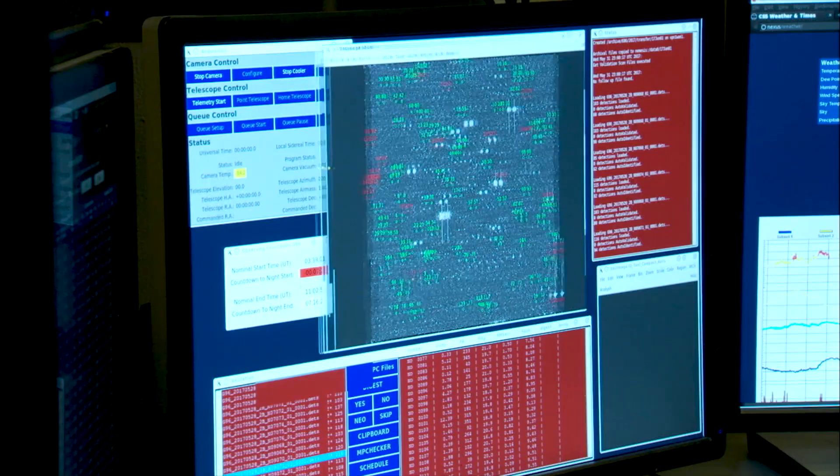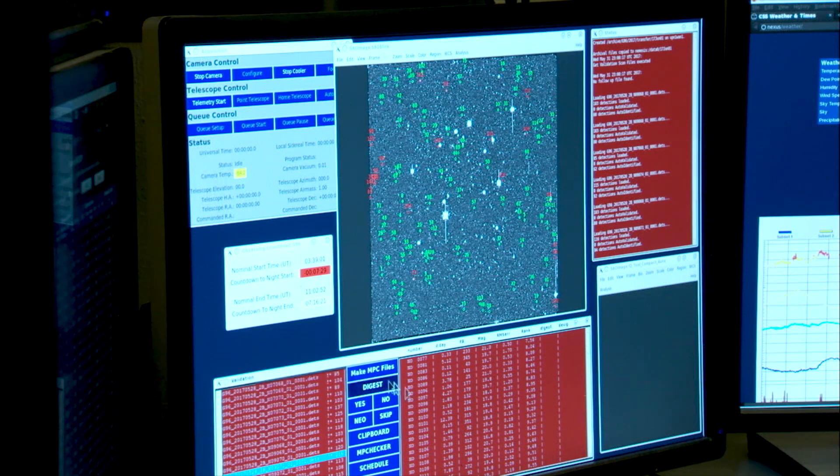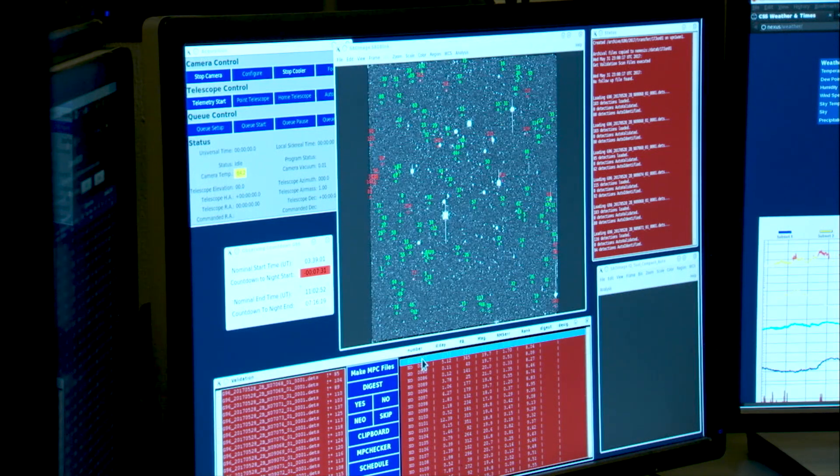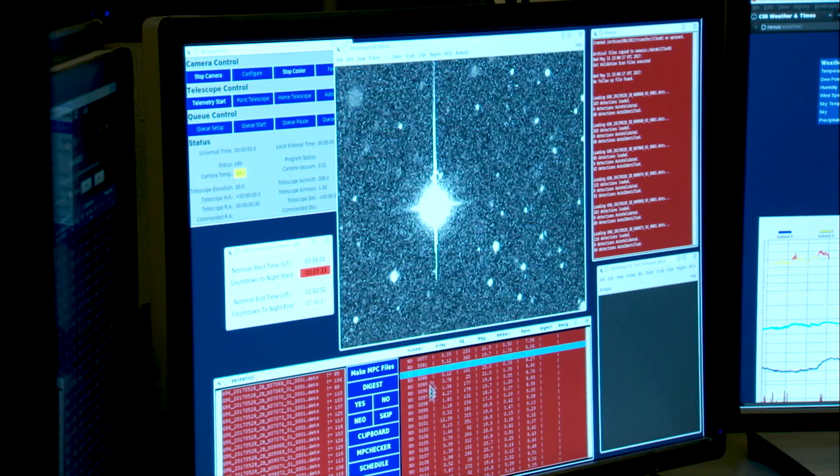Our software compares those images and identifies things that are not moving, which are stars, and removes those. It identifies things that are transient from frame to frame and tries to link those up.